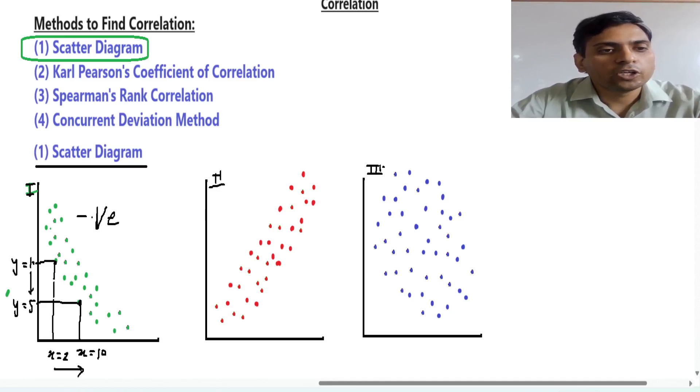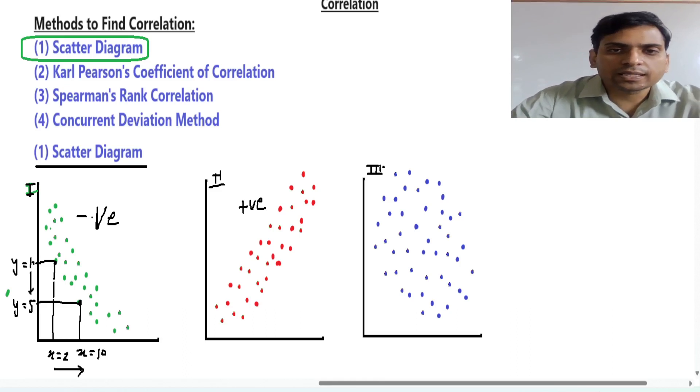Now in this case this is reversed as there is an increasing pattern or we can say the direction is upward. So we can say there is positive type of correlation.